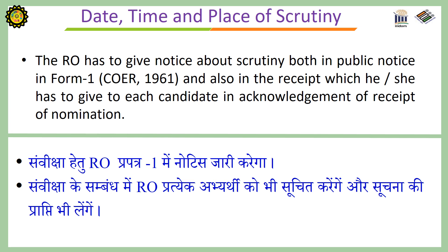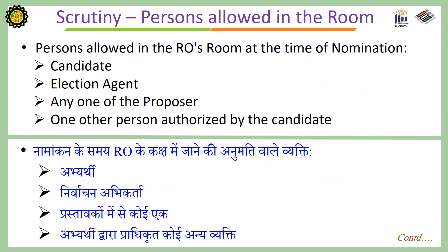Date, time and place of scrutiny: The RO has to give notice about scrutiny both in a public notice in Form 1 and also in the receipt given to each candidate in acknowledgement of receipt of nomination. Persons allowed in the RO's room at the time of scrutiny are: the candidate, election agent, any one of the proposers, and one other person authorized by the candidate.